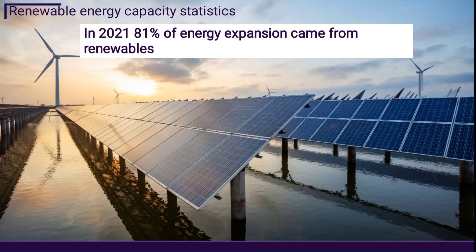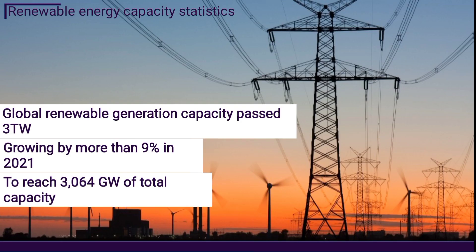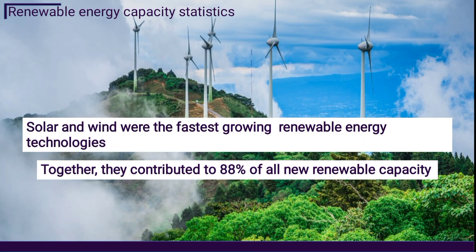As we can see, in 2021, 81 percent of energy expansion came from renewables, which is very motivating in this area. Moreover, the global renewable generation capacity passed three terawatts, growing by more than nine percent in 2021, which means a proportion of 3.064 gigawatts of total capacity.